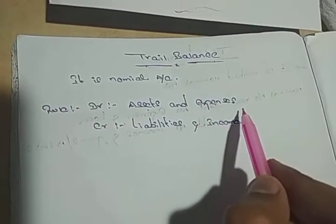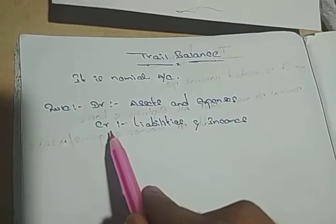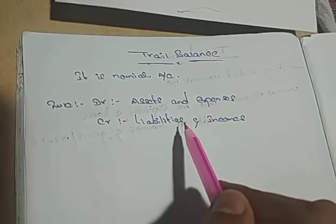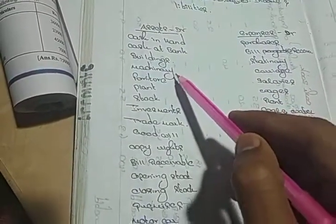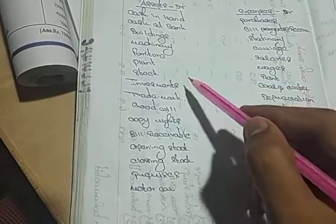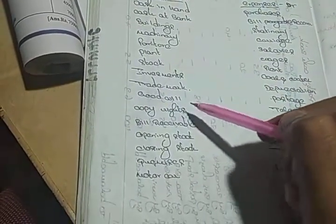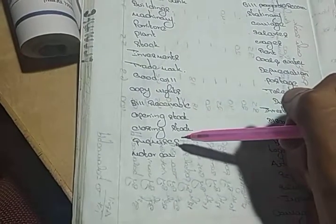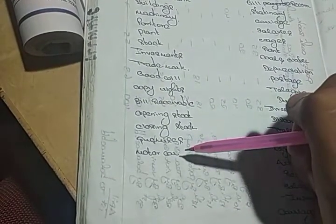Asset: cash in hand, bank, building, machinery, furniture, plant, stock, investment, trademark, goodwill, copyrights, bills receivable, opening stock, closing stock, promises, motor car.